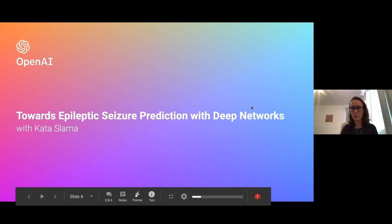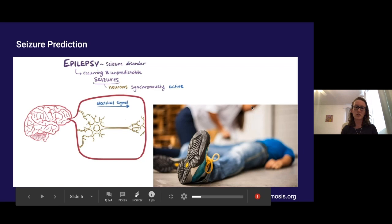So what are seizures? A seizure is when the neurons in your brain start to fire too synchronously for your good. At worst they will take over your whole brain and you will literally pass out. If you have a lot of seizures repeatedly, they're recurring and unpredictable, you might be diagnosed with a disorder known as epilepsy.